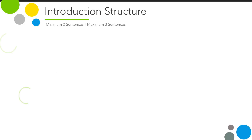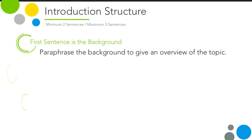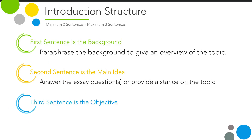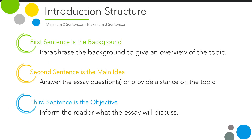In the introduction, we will write 3 sentences. First, paraphrase the background — the background is the information they provide in the essay topic. Second, answer the question — the essay topic will ask a question or provide specific instructions, so answer that. Finally, the last sentence is a general sentence stating what the essay will discuss. Don't provide any specific details here; this sentence is just for extra word count.